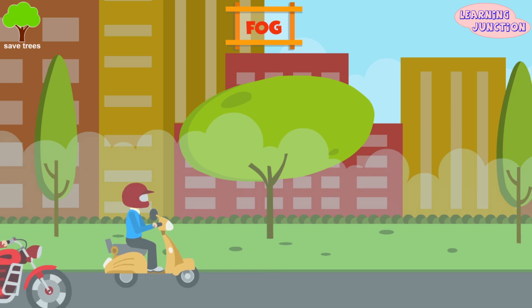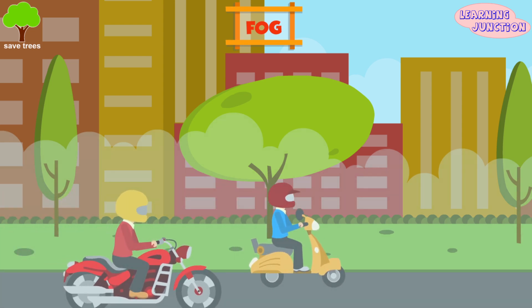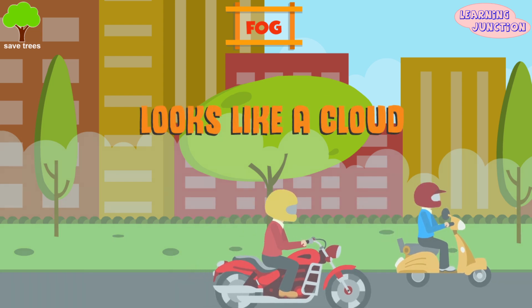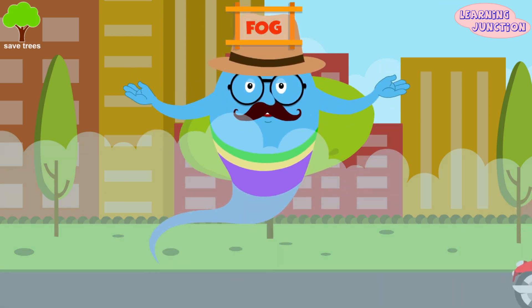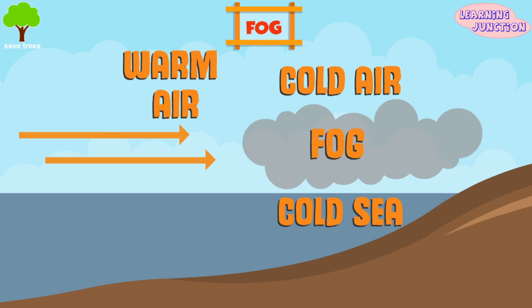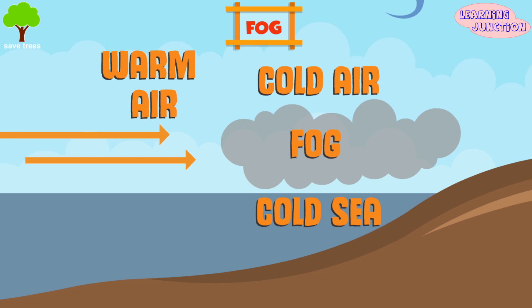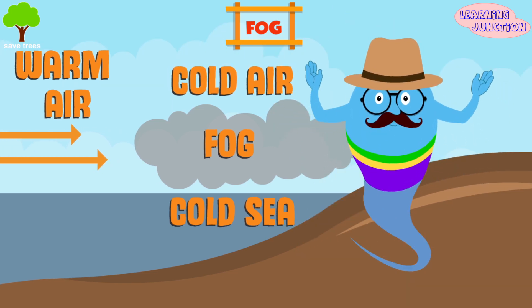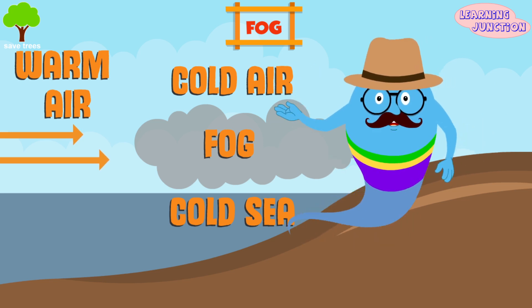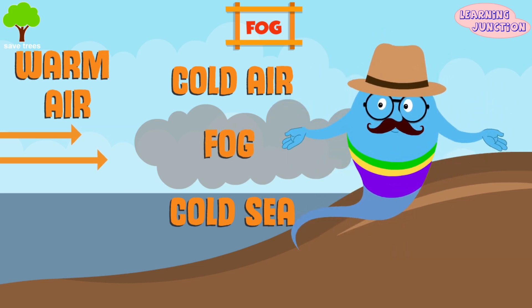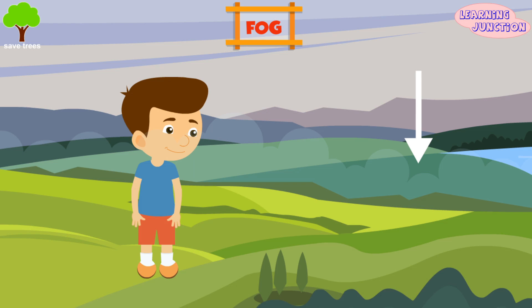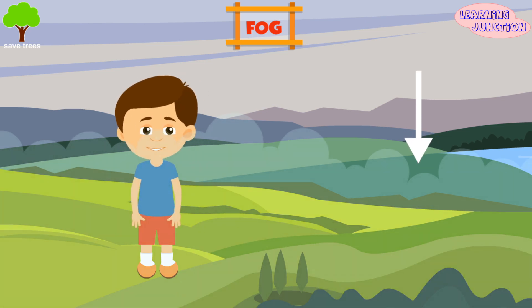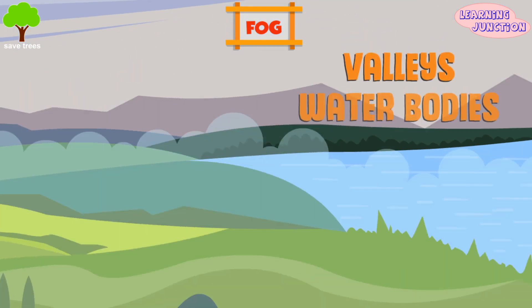Fog. Tiny water drops hovering in the air are known as fog. Fog looks like a cloud, but it is near the ground, not up in the sky. It becomes difficult to see when the fog is thick. Fog forms from water vapor, which is actually water in the form of gas. When the air cools, water vapor in the air condenses or turns back into liquid. Fog appears when this liquid accumulates on dust in the air. A moderate wind helps fog to form and to stay in the air. Fog is very common in valleys and nearby water bodies.